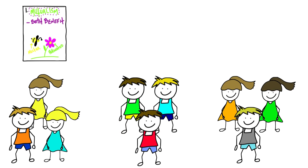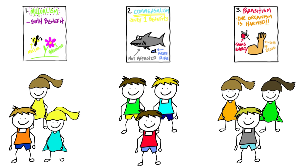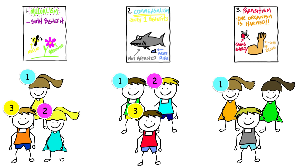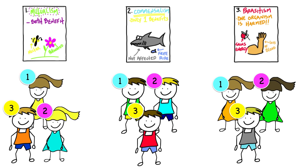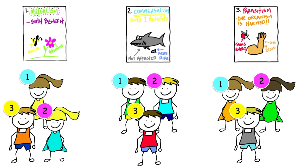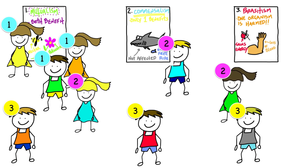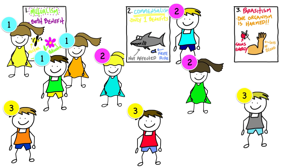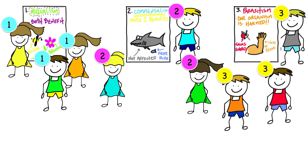When creation time is up your teacher will post the work. Next your teacher will give you a number by counting off. All of the students who are given the number one stand by poster number one. All of the twos stand by poster two and all of the students who got number three stand by poster three.